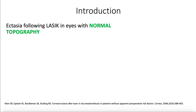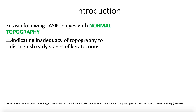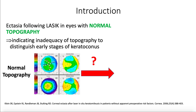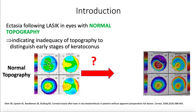There is a problem in some cases of post-LASIK ectasia after normal topography. This means that there is a problem in corneal topography to diagnose early stages of keratoconus, like in this case where we have normal topography that leads to post-LASIK ectasia.